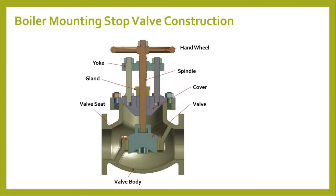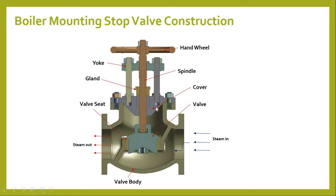Now we will see the construction of a boiler mounting stop valve. Steam enters from one side, and rotating the hand wheel anti-clockwise moves the spindle up, allowing steam to flow through. Rotating clockwise moves it down, seating the valve on the valve seat. The major parts are: hand wheel, spindle connected to the valve, valve seat, valve body, cover with bolted joints between the cover and valve body, gland, yoke, and studs.